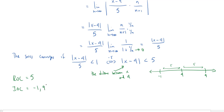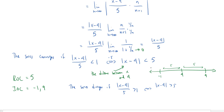You might wonder why I'm not putting parentheses or square brackets yet — that's because we don't know without checking the endpoints individually. We do know that the series diverges if the absolute value of (x minus 4) over 5 is greater than 1, or equivalently if the absolute value of (x minus 4) is greater than 5. So beyond negative 1 to the left or beyond 9 to the right the series diverges. But the ratio test fails when this ratio equals 1, which occurs at the two endpoints negative 1 and 9, so we'll have to check those points manually.